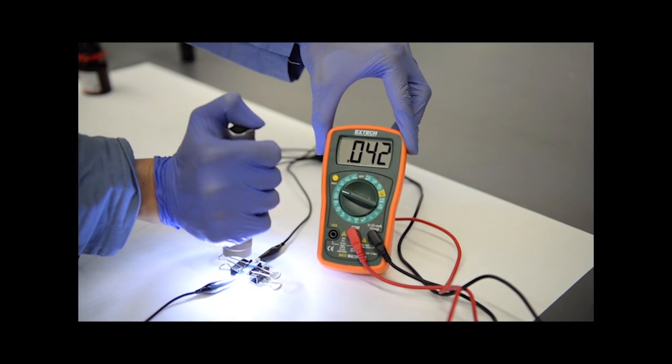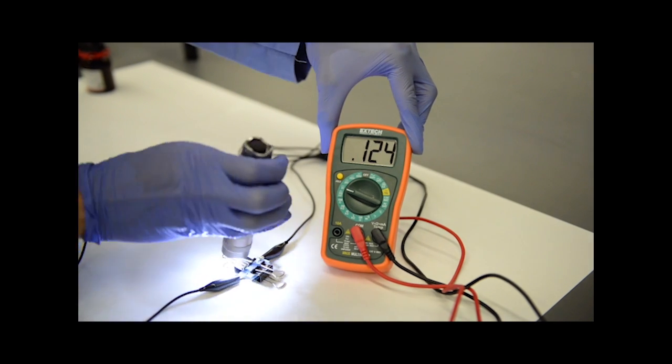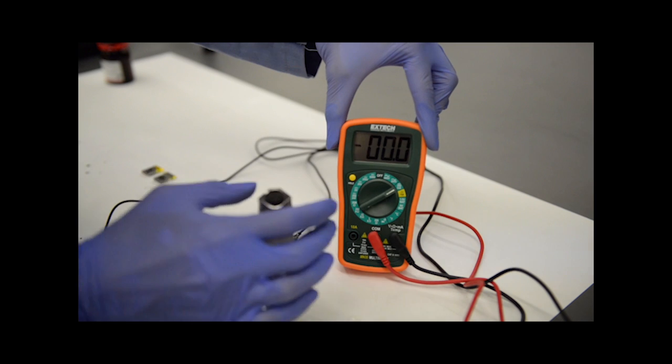We measure voltage by turning the multimeter knob to the 2-volt mark. We measure current by turning the knob to 1 milliamp mark.